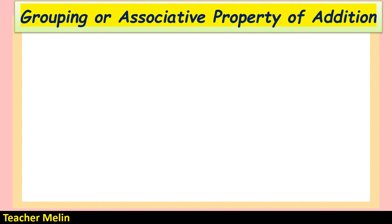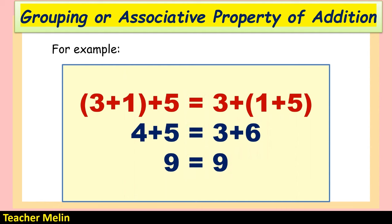Another example of the associative property: 3 plus 1 plus 5. Grouping 3 and 1 first: 3 plus 1 equals 4, then 4 plus 5 equals 9. Or grouping 1 and 5: 1 plus 5 equals 6, then 3 plus 6 equals 9. Both sides give 9, confirming the associative property.